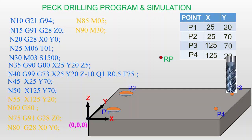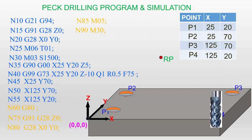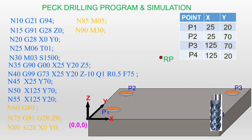Next, move to point 4 with coordinates X125, Y20. The tool drills at point 4 — going inside and moving back up. The drilling of all four points is now completed.